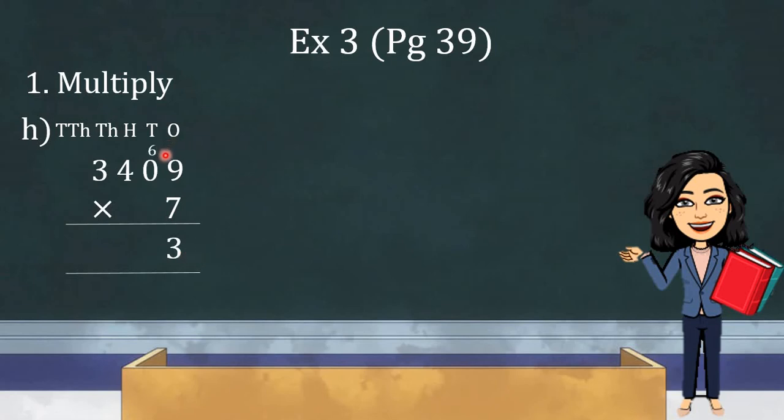Now, kids, whatever is the carryover is to be added in the answer of the multiplication of next place, right? So, 7 times 0 gives us 0 and 0 plus 6 gives us 6. So, we will write 6 under 10's place now.